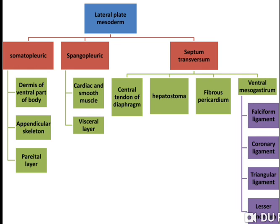Septum transversum differentiates into central tendon of diaphragm, hepatostoma, fibrous pericardium and ventral mesogastrium. Ventral mesogastrium differentiates into falciform ligament, coronary ligament, triangular ligament and lesser omentum.